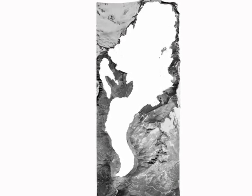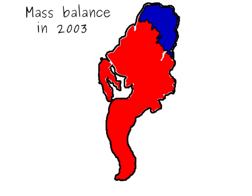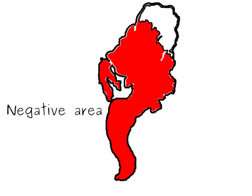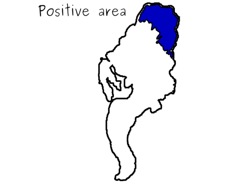Let's look at the mass balance of the Rhône Glacier in 2003, well known for the summer heat wave. A lot of mass was lost as seen by the wide negative area. In contrast, there's a small positive area at the top.